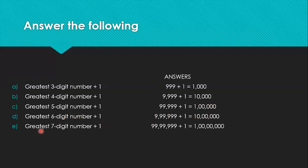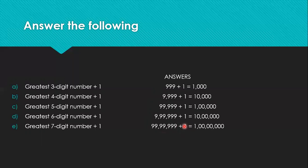Greatest seven-digit number plus one: the greatest seven-digit number is 99,99,999. If we add one to this number, we will get the smallest eight-digit number.